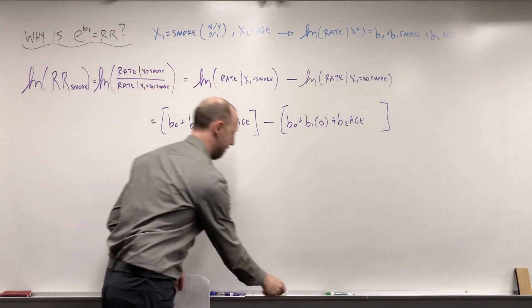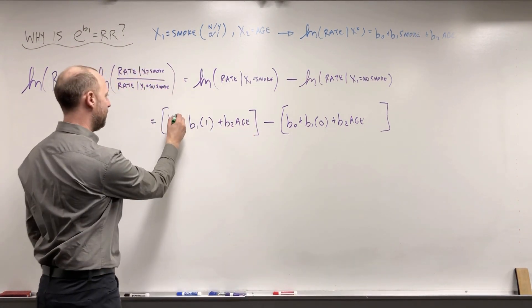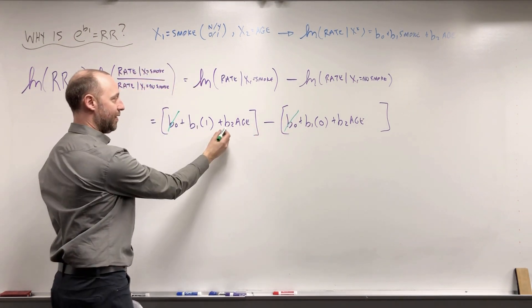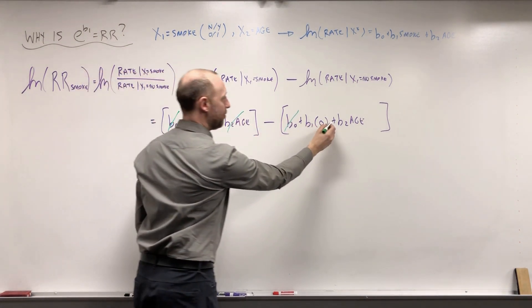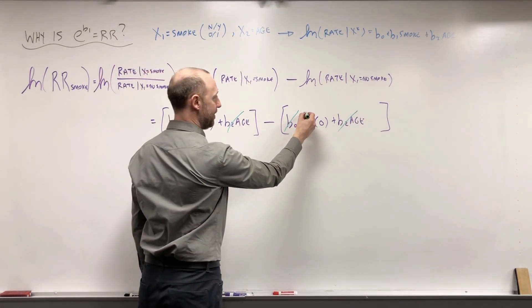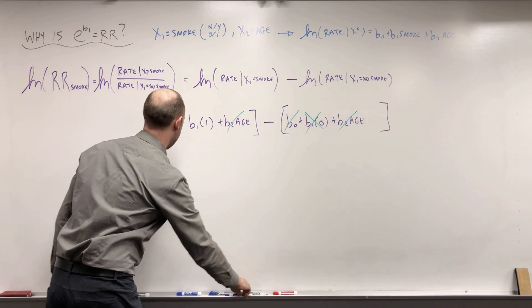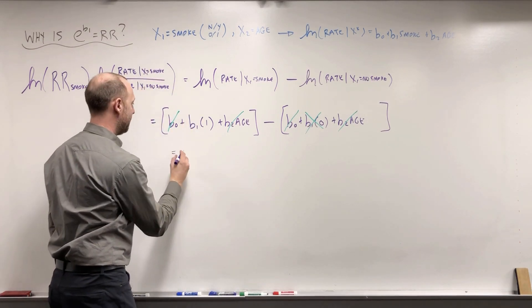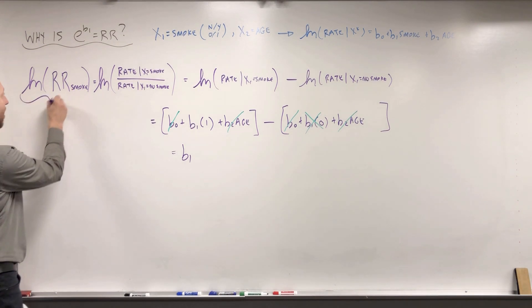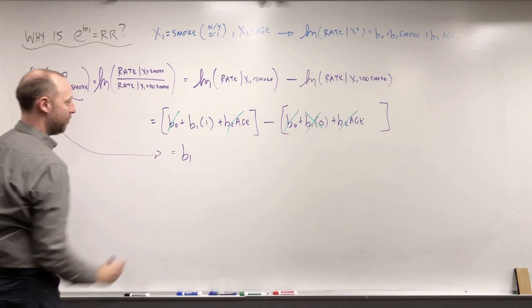Now if we look at this here you can see b0 minus b0 is going to cancel out. b2 times the age minus b2 times the age is going to cancel out. This here is 0 and we're left with just b1, and so the log rate ratio is b1.